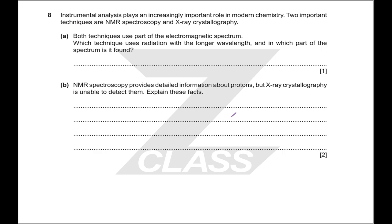Instrumental analysis is really important: we have NMR and X-ray crystallography, both of which use part of the electromagnetic spectrum. For which technique uses radiation with the longer wavelength: NMR uses the longer wavelength — X-rays are very short wavelength. There's a clue in the question: they ask which part of the spectrum, so the answer isn't X-ray crystallography (that would give the answer away). NMR uses radio waves — that's just a definition to learn.